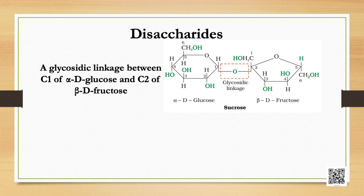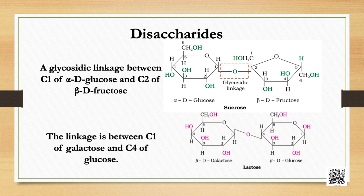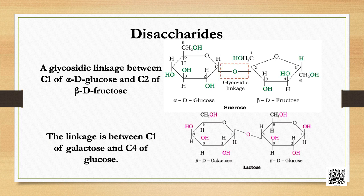In disaccharides, if the reducing groups of monosaccharides — that is, the aldehydic or ketonic groups — are bonded, these are non-reducing sugars; for example, sucrose. On the other hand, sugars in which these functional groups are free are called reducing sugars; for example, maltose. Sucrose on hydrolysis gives an equimolar mixture of D(+)-glucose and D(−)-fructose. These two monosaccharides are held together by a glycosidic linkage between C1 of alpha-D-glucose and C2 of beta-D-fructose. Since the reducing groups of both glucose and fructose are involved in glycosidic bond formation, sucrose is a non-reducing sugar.